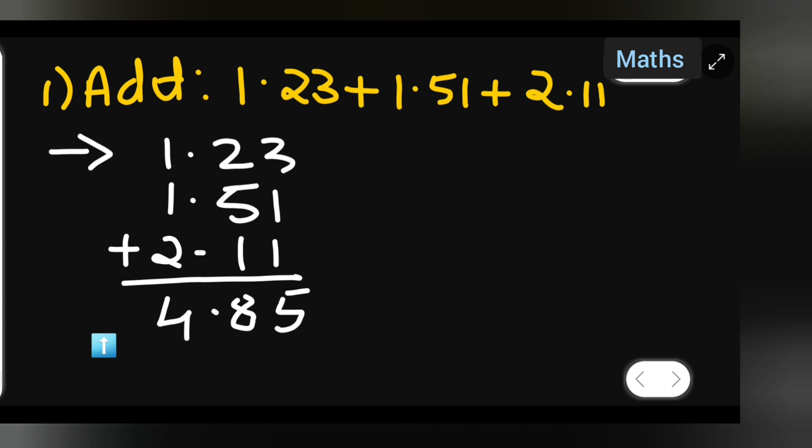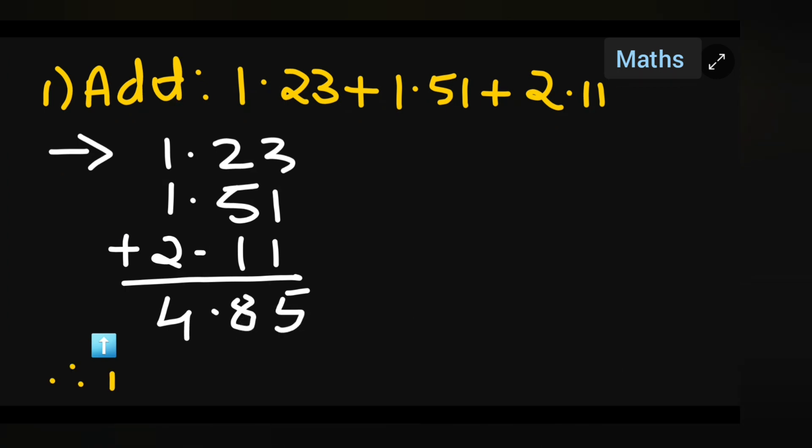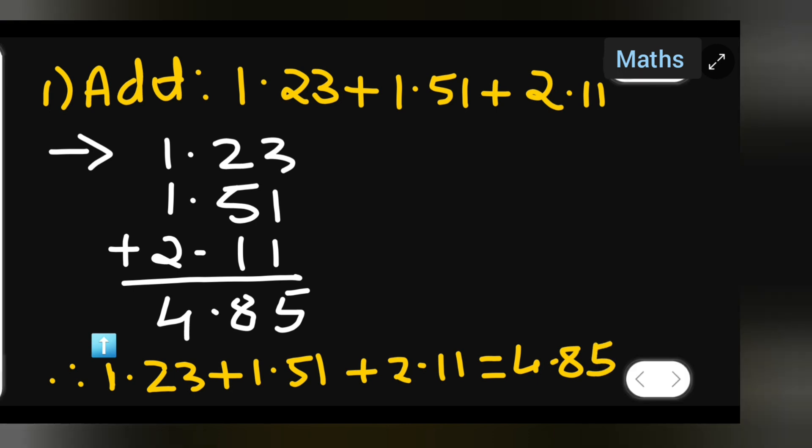Therefore, you can say that 1.23 plus 1.51 plus 2.11 is equal to 4.85. I hope you have understood how to add numbers with a decimal point. Thanks for watching.